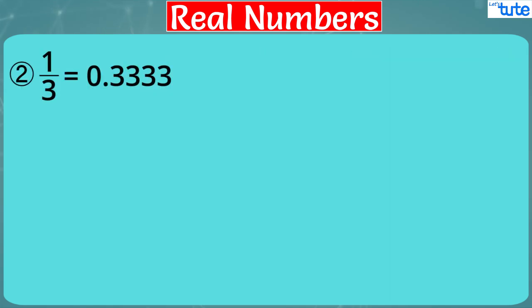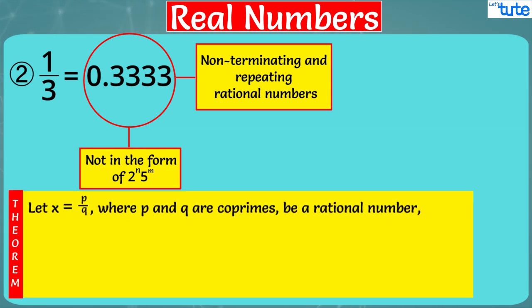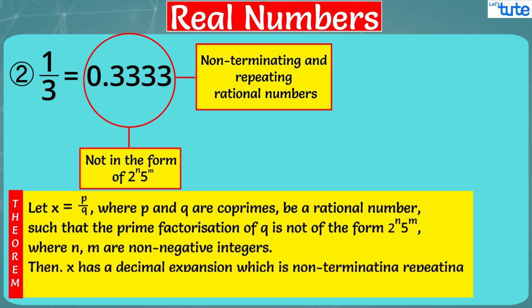But friends, what about the rational numbers whose prime factorization of q is not in the form of 2^n × 5^m? They are non-terminating and repeating rational numbers. There is a theorem for this condition which states that let x = p/q, where p and q are coprimes, be a rational number such that prime factorization of q is not of the form 2^n × 5^m, where n, m are non-negative integers. Then x has a decimal expansion which is non-terminating, repeating, also called as recurring.